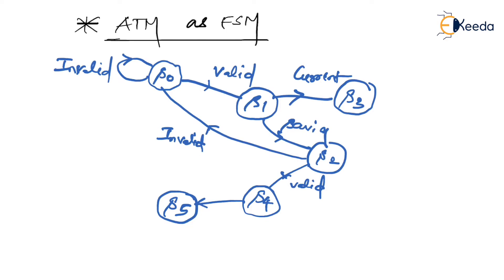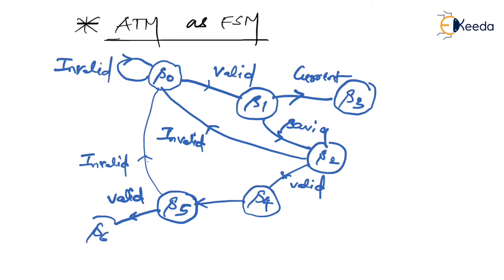An invalid amount also includes an amount that exceeds what is available in your saving account. For an invalid amount, you are forced back to S0. If you enter a valid amount — a multiple of hundred that is also available in your account — you move to S6 state, where you receive your cash and your card is returned to you.